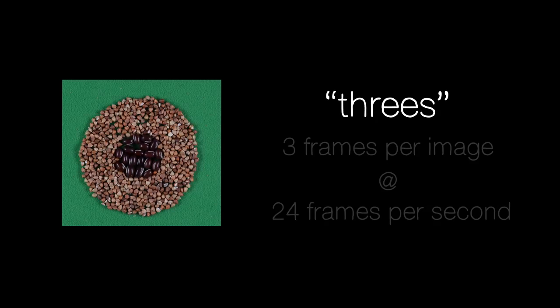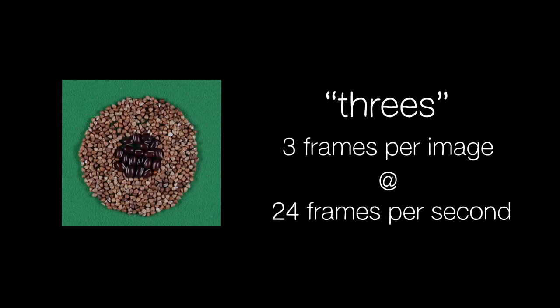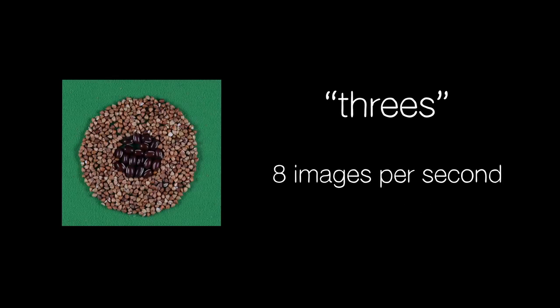Those would play on what animators call threes — meaning each picture is on screen for three frames at 24 frames per second. So for the shimmers, you were seeing eight different pictures each second of footage.